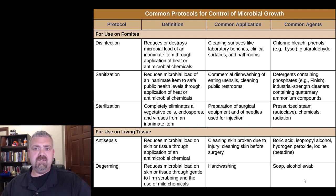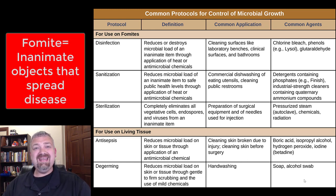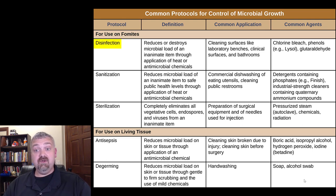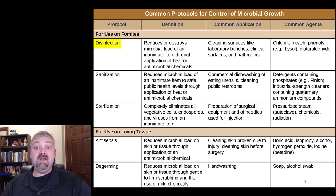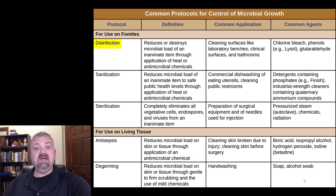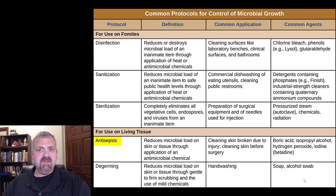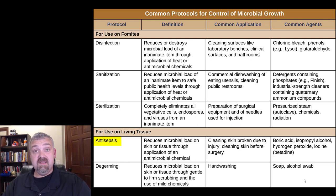Let's look at this list. First, for use on fomites — fomites are inanimate objects that can spread disease. Disinfection is using a chemical or physical control method to reduce the number of organisms on an inanimate object. Think surfaces — disinfectants are used when cleaning lab benches or cleaning your toilet at home. Compare that to antiseptics, which do the same thing but on living tissue or skin.